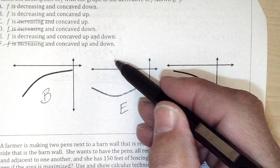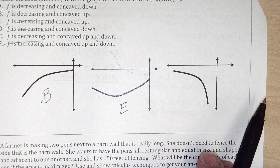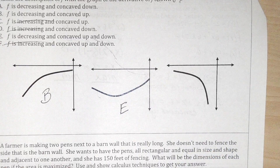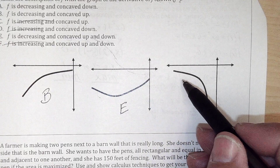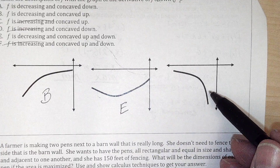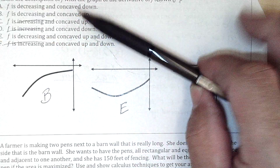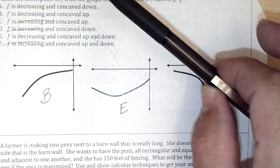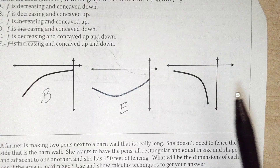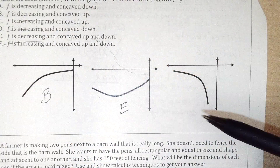Graph E is concave down then up. Another graph: all negative so decreasing, and going from a not-very-negative slope to a more negative slope — that's concave down and decreasing, which is graph A.